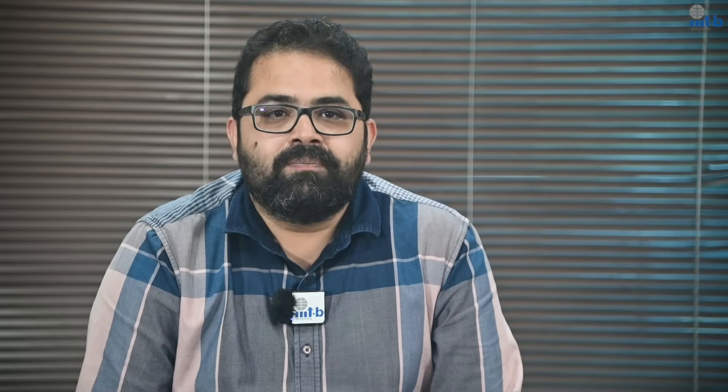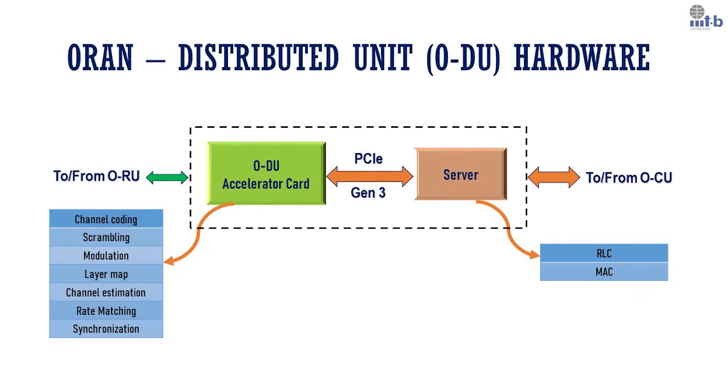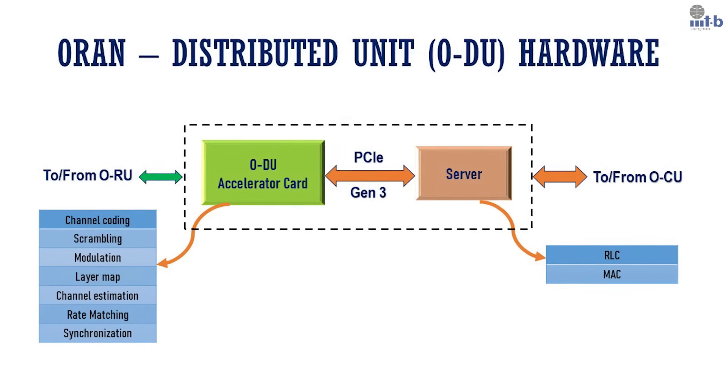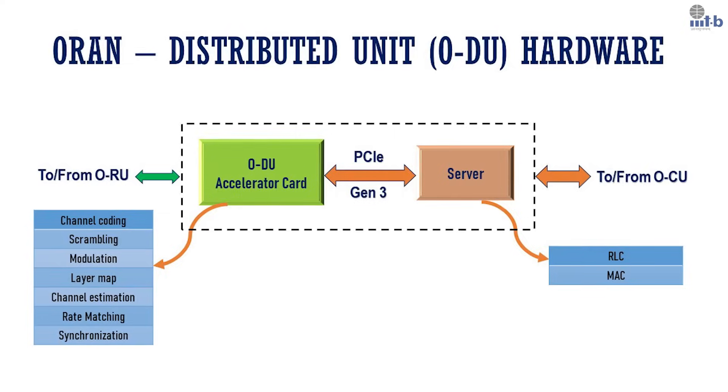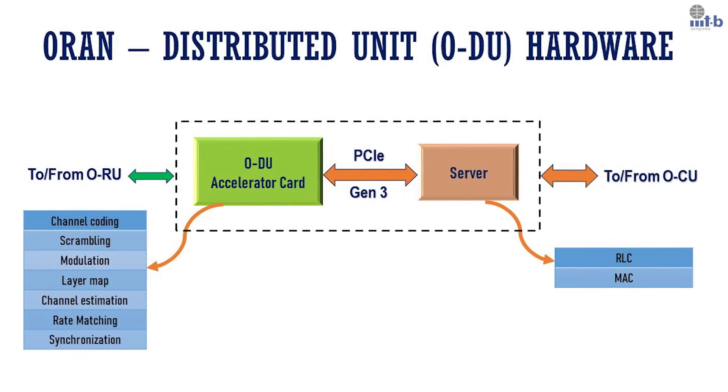Our ODU card can support 5G transmission and reception up to 4 layers. The accelerator card has all the standard interfaces like USB, SD card, QSPI, JTAG, UART, Ethernet, etc. This card is designed to fit seamlessly into a centralized server which can host up to 9 such accelerator cards, functioning as a robust centralized unit or CU.